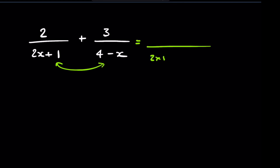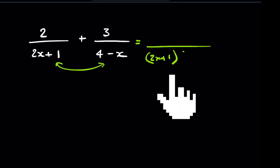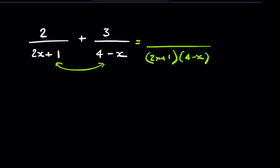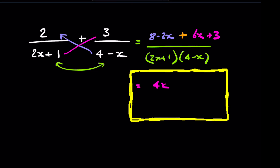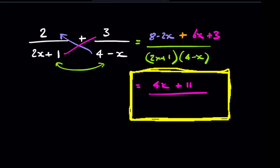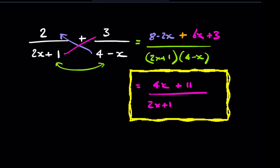We'll have these two factors: 2x+1 and 4−x. When we do that we'll also have to cross-multiply, so we're going to get 8−2x, and then with the addition we cross-multiply the other pair to get 6x+3. Tidying all of that up, we'll get 4x+11 all over (2x+1)(4−x).